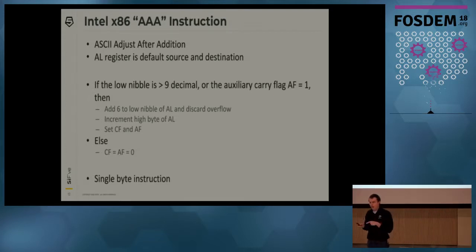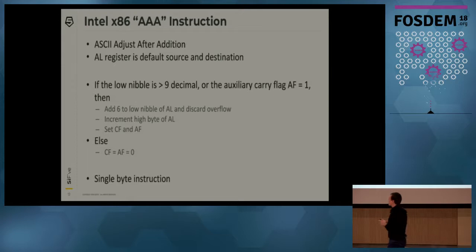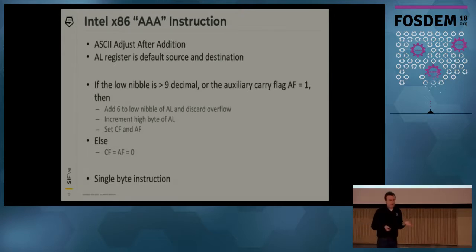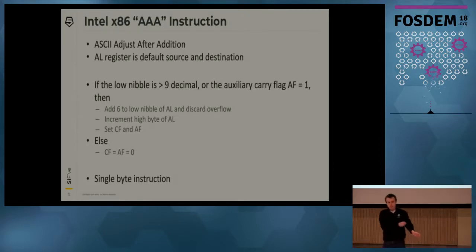When digging around trying to figure out how to assemble it, I found that the 286 had a bug in its AAA implementation, and we've maintained compatibility with that bug until today. Not only do we have a legacy instruction designed to maintain compatibility with calculators, it's not even really quite compatible. So if Intel can't even get x86 right, how are we going to do it right?